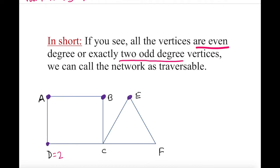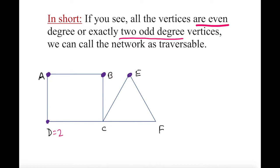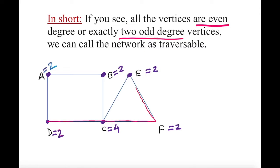Here's a new network. Is it traversable? Checking the degrees: B is two, E is two, F is two, and this point has four — all even degrees. So by our rule, without even tracing, we know it's traversable. I can start anywhere. I can go through vertices more than once, but each edge only once.